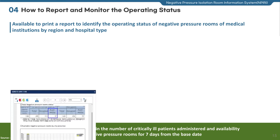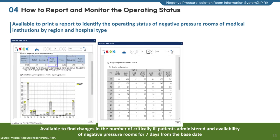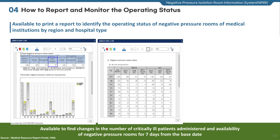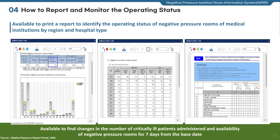The print function in the monitoring page helps users identify changes in the number of patients in critical condition and available beds over seven days from the base date, using search conditions, as well as the operating status of negative pressure rooms by region and hospital type. In addition, this function supports conversion of file formats to Hangul, Excel, and PDF.